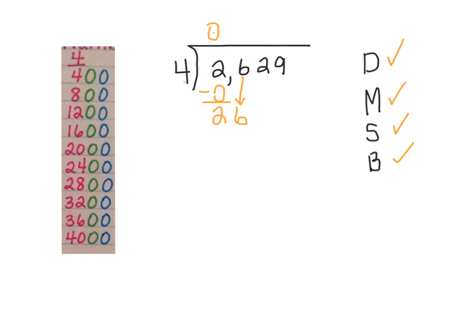After I bring down, I know that I'm ready to go back and start the process over again. 26 divided by 4. If I look down my friendly numbers, I can get to 24, but I can't get to 28 because that goes over. So if I'm thinking about 24, my multiple of 4 is 6.